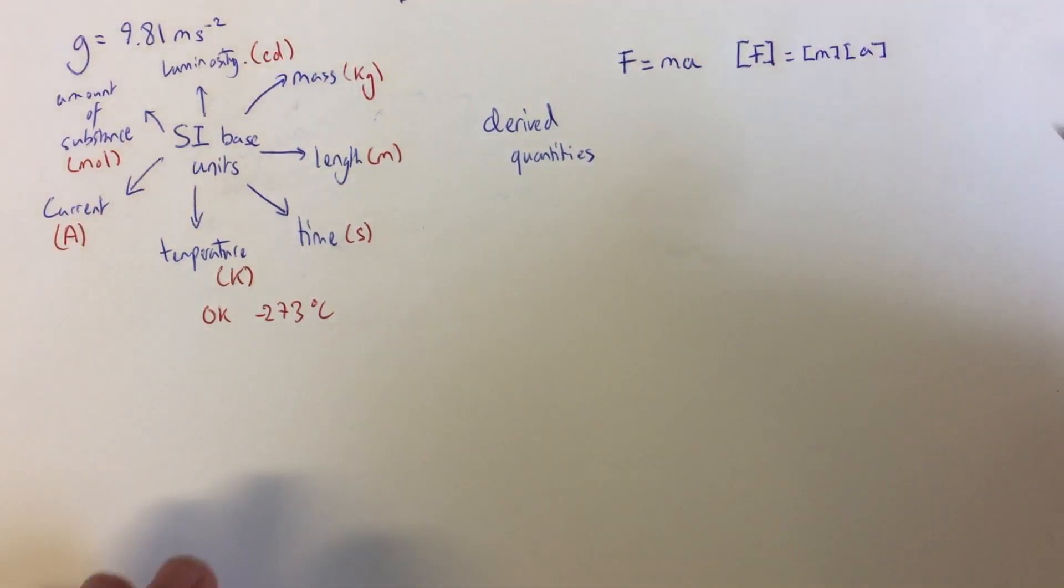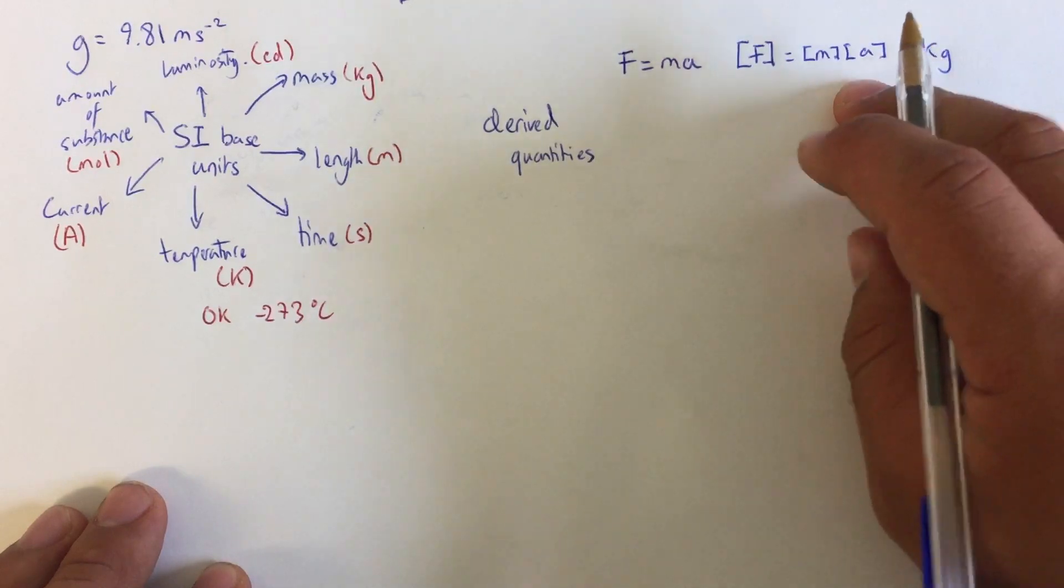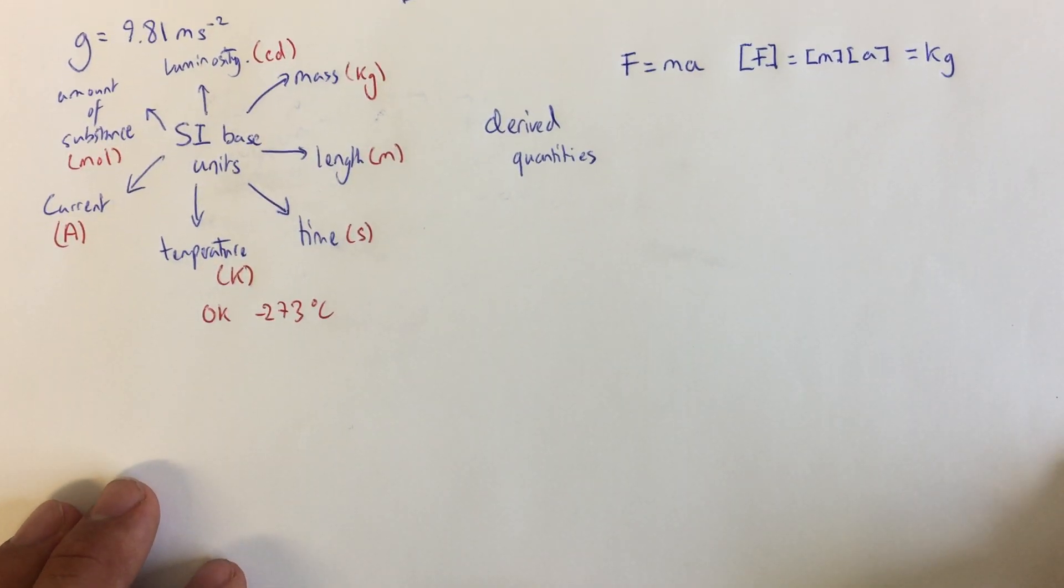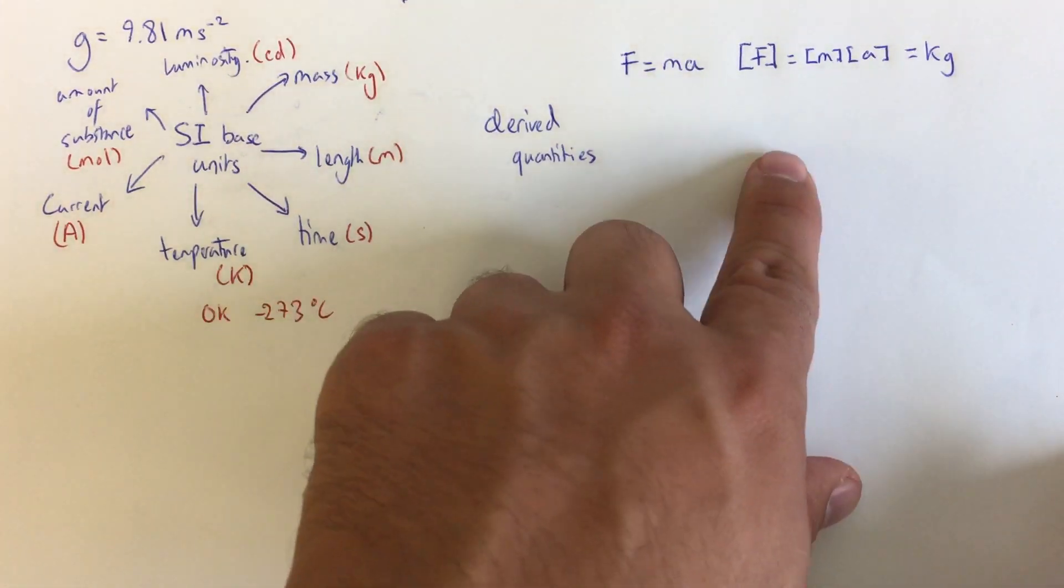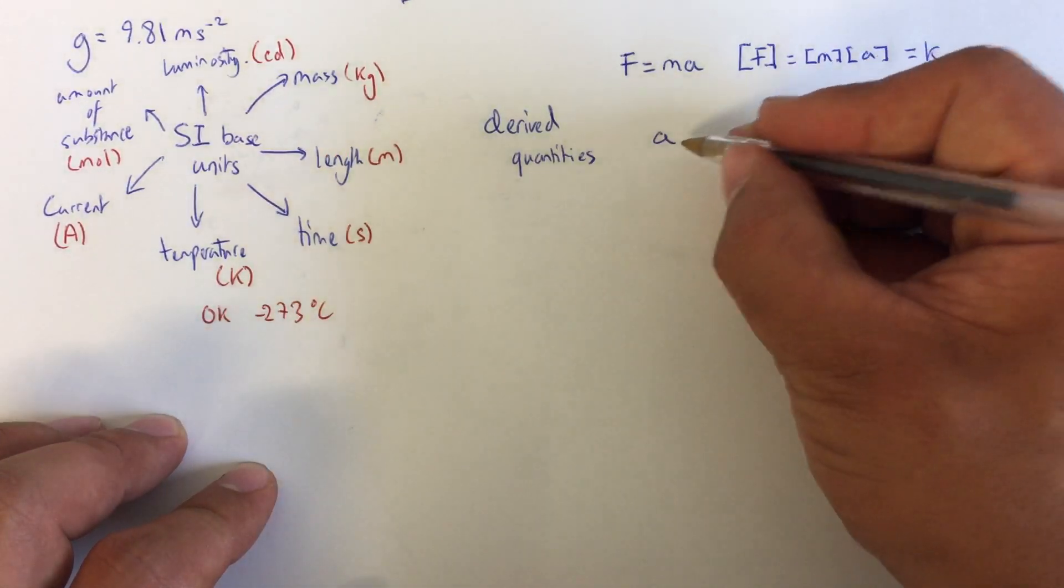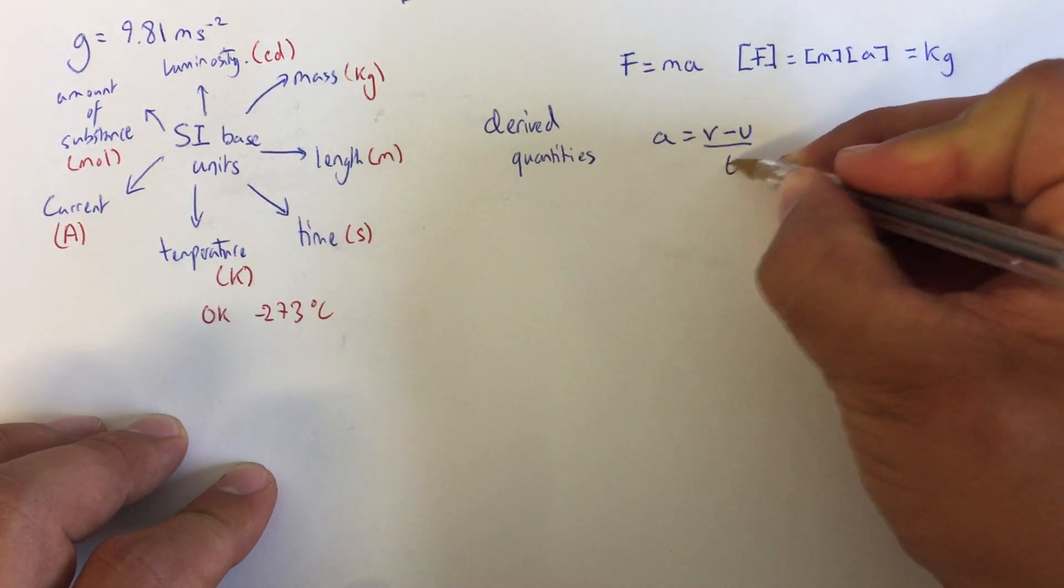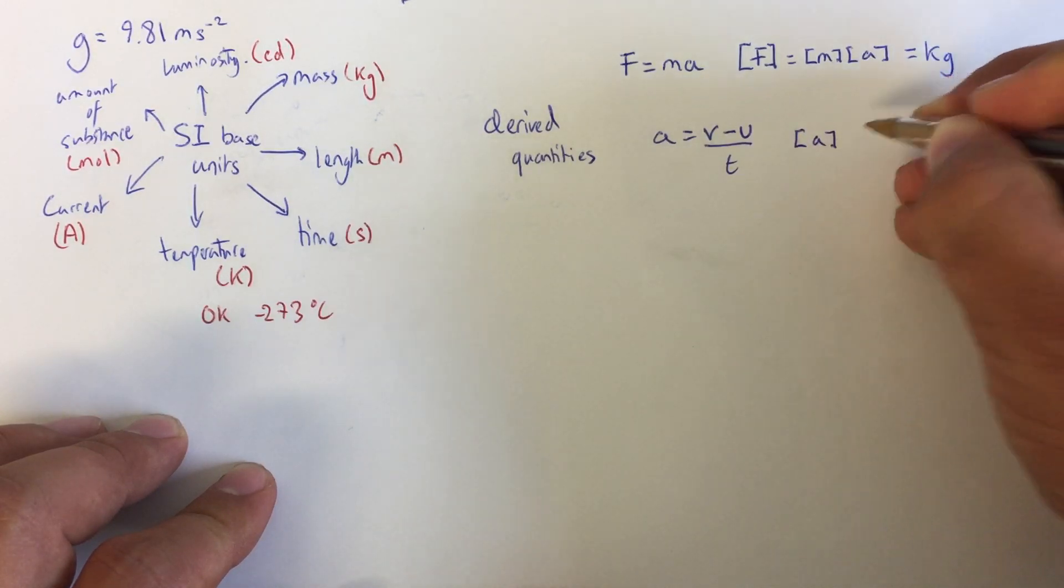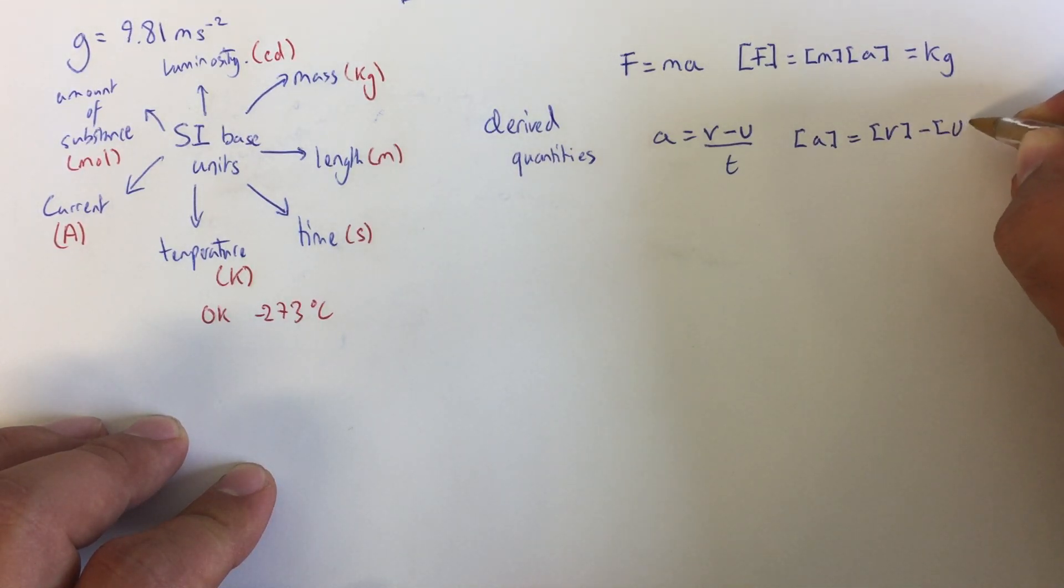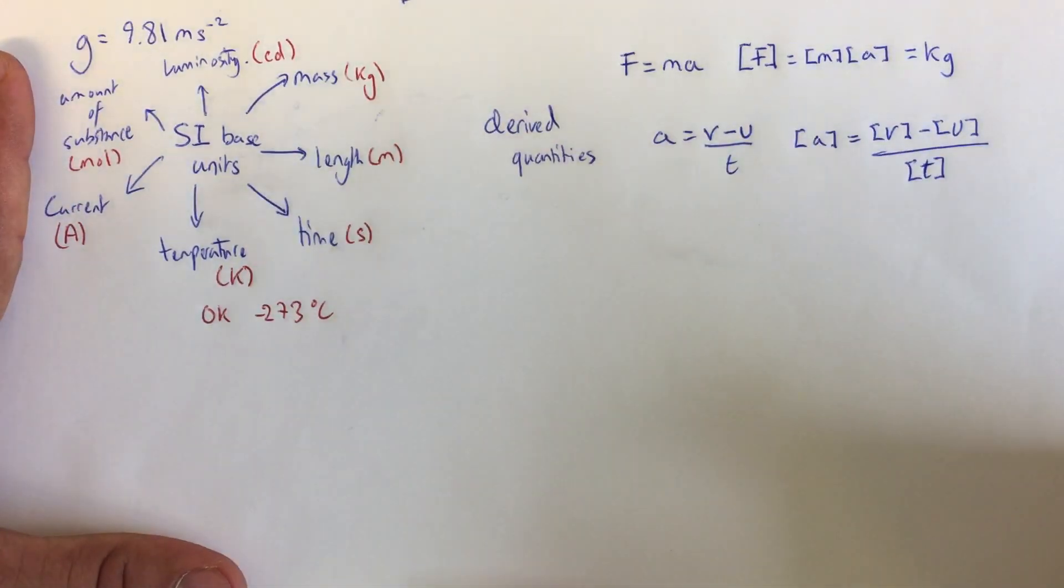First of all, the unit of mass we know is kilograms. But acceleration is not included on this list, so acceleration in itself has a derived unit. Before we finish this force example, let's have a look at acceleration. Acceleration is final velocity minus initial velocity, V minus U, divided by T. So the units of acceleration are going to be the units of V, the final velocity, minus the unit of U, divided by the unit of time.